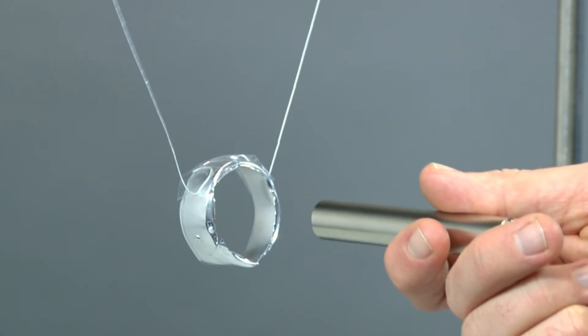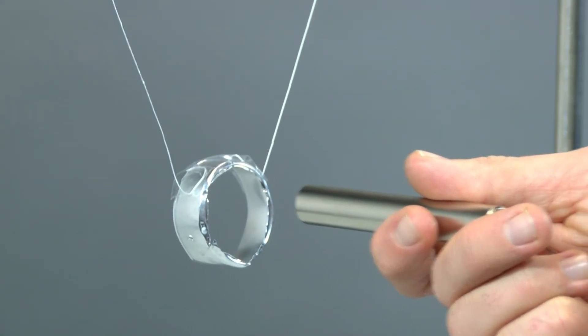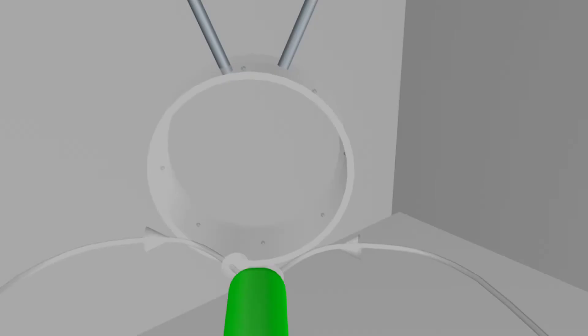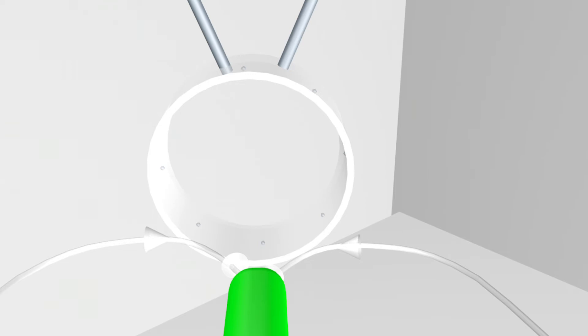The question is what happens in the aluminum ring when the magnet approaches. To do this we switch to the model level. The small dots in the aluminum ring are supposed to represent some free electrons in the aluminum.